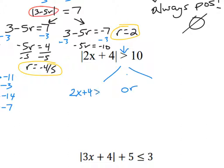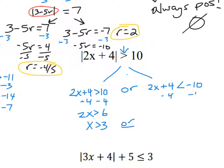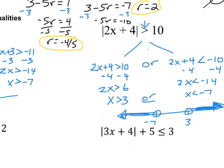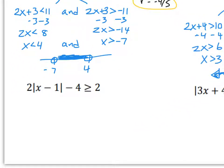For the next one, my absolute value is by itself and it's a greater than, so I connect with OR. Drop it: 2x plus 4 is greater than 10, OR 2x plus 4 is less than negative 10 (switch inequality, switch sign). Solving the first: subtract 4 to get 2x greater than 6, divide by 2, so x is greater than 3. Solving the second: subtract 4 to get 2x less than negative 14, divide by 2, so x is less than negative 7. On the number line, negative 7 and 3 are both open circles — going right from 3 or left from negative 7.